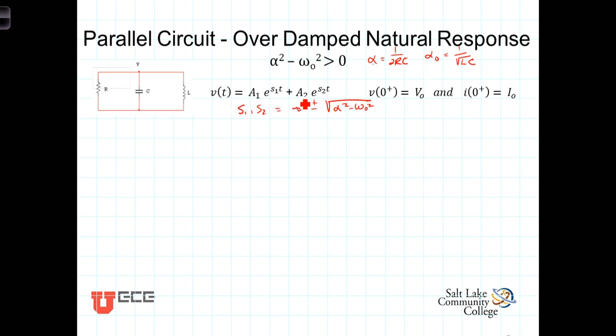All that's left to determine the response of this circuit is to find the constants A1 and A2. Because there are two constants, we need two equations from the two initial conditions. The first equation can be obtained by evaluating the expression at t = 0⁺: v(0⁺) = A1·e^(S1·0) + A2·e^(S2·0). Since e^0 = 1, we have v(0⁺) = A1 + A2, which equals V₀, the initial voltage on the capacitor. Thus we have our first equation.